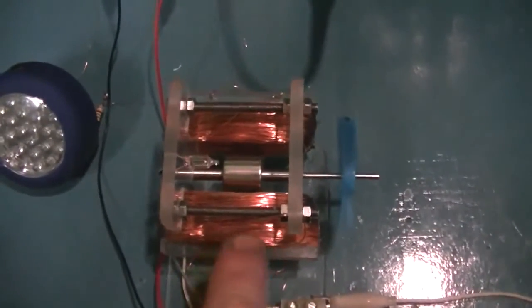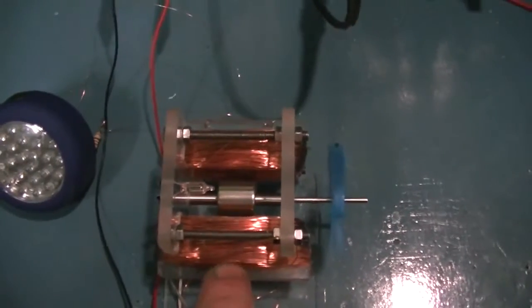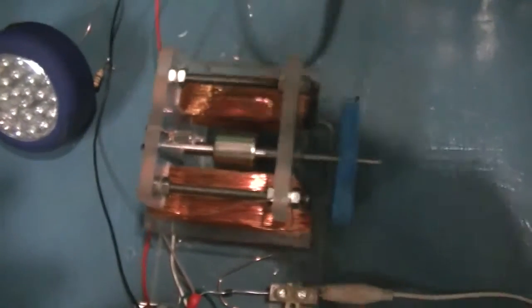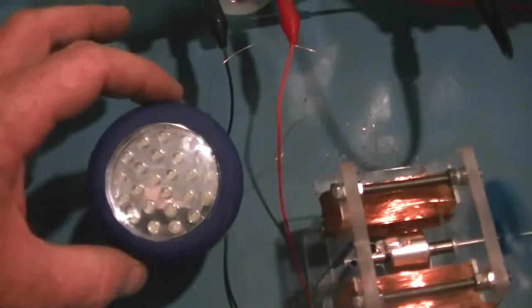This coil is the bi-filar coil running the trigger. The coil on the back is our generator coil which is hooked up to this LED with many LEDs in it, don't know how many.